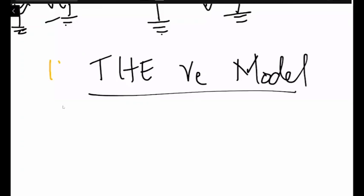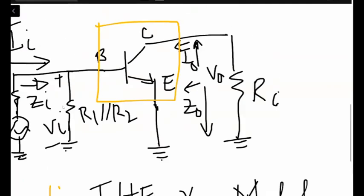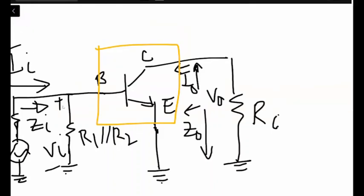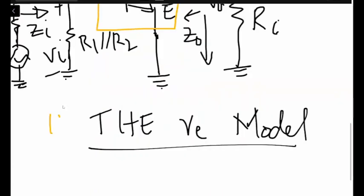We are back and now what we have to do is make the RE model for the common emitter configuration circuit. We have the base, collector, and emitter connected in the common emitter configuration, so we have to devise the model for this configuration.